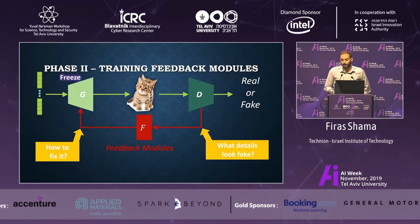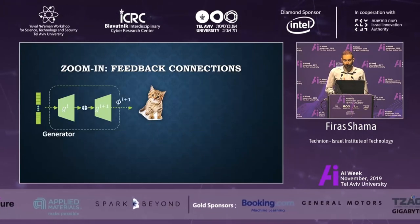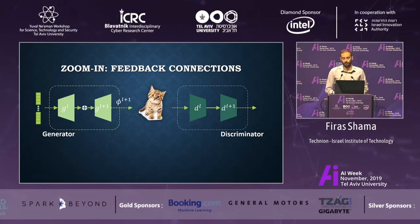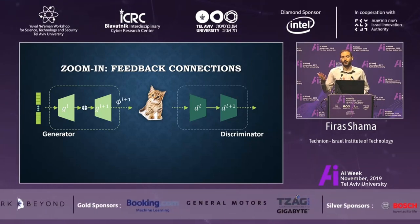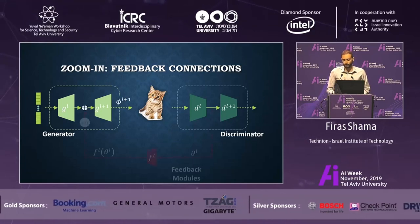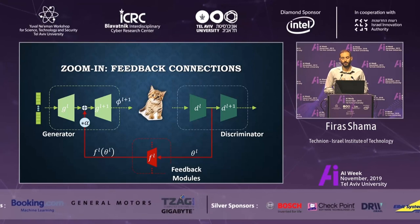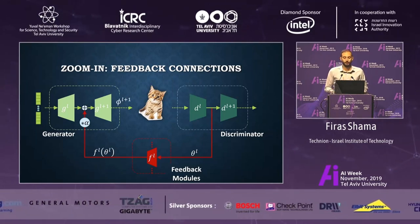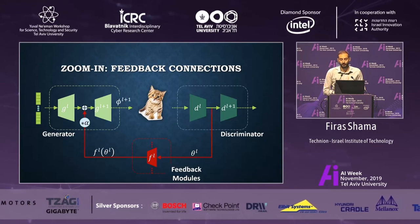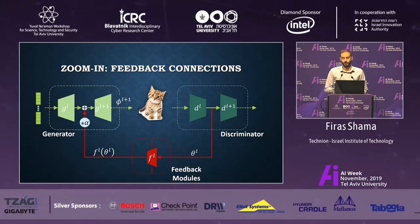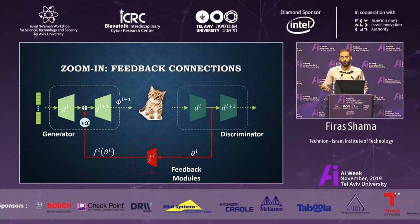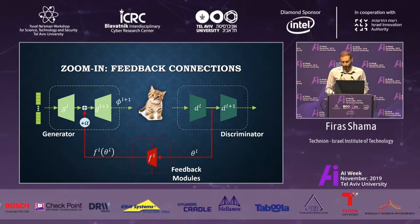The feedback models are optimized to provide those corrections. Going deeper to the conv layers level: an input is passed into the generator layers, its output is evaluated by the discriminator, which calculates very informative features about the image. The feedback models use this information to produce corrections, which are then multiplied by an alpha parameter. This alpha controls the contribution of the feedback models — it's set to 1 during training, but in test time we can control how much correction we want.